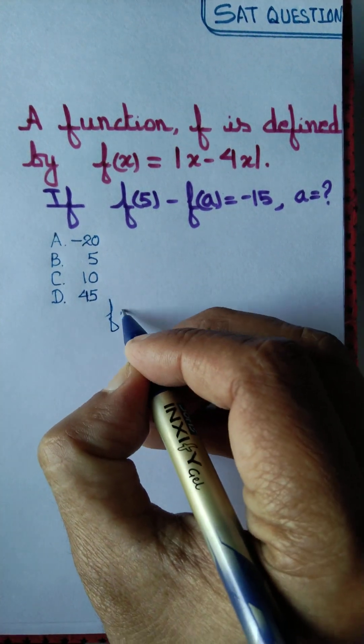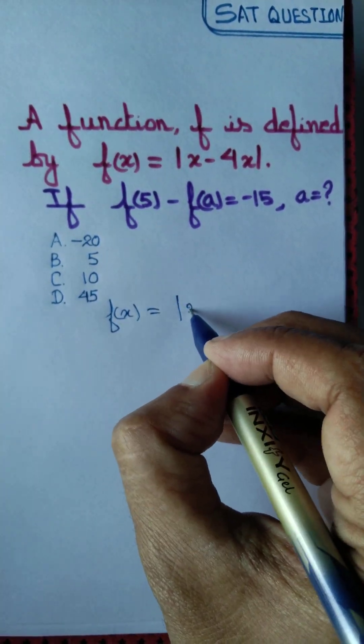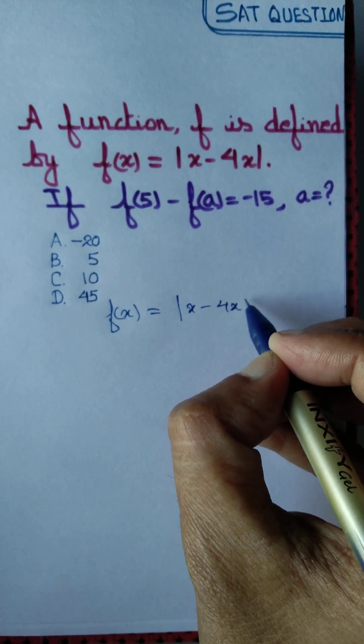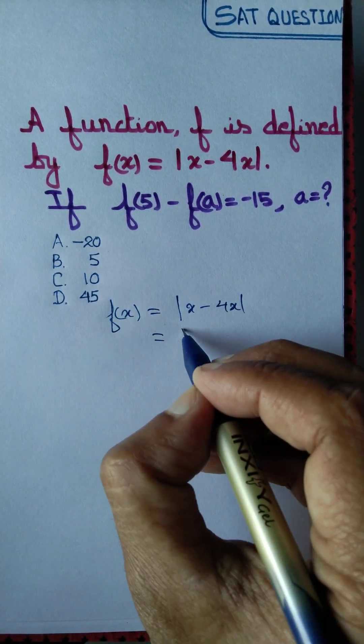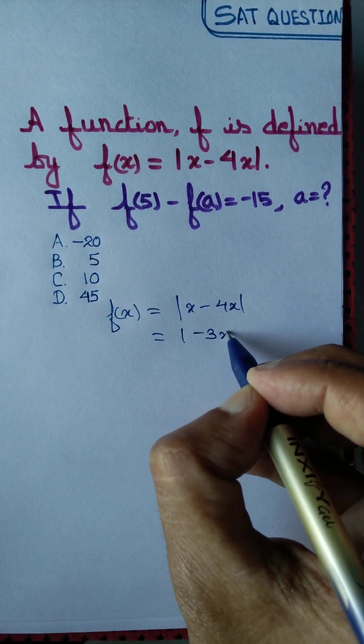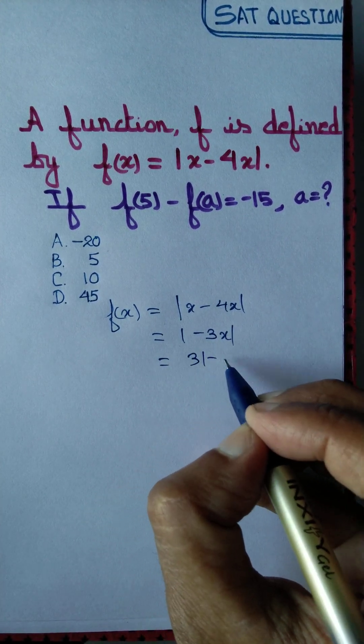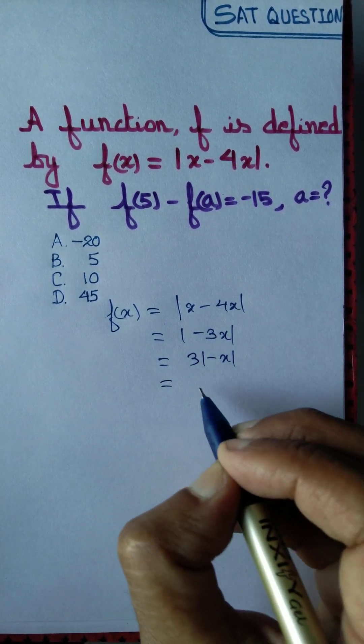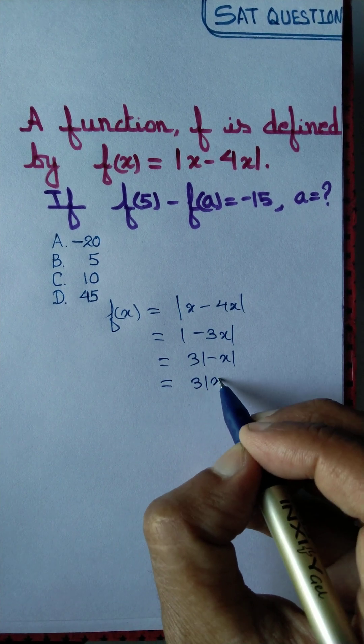We got f(x) equal to modulus of x minus 4x. That's equal to modulus of minus 3x, and that's equal to 3 times modulus of minus x, and that is equal to 3 times modulus of x.